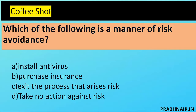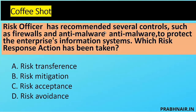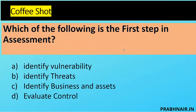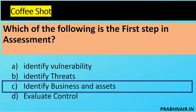Question twelve: a risk officer recommended controls such as firewall and anti-malware to protect information systems — which risk response action has been taken? It's not transfer, not avoidance (they didn't quit the business), and not acceptance. Introducing controls equals mitigation. The answer is B. Question thirteen: which of the following is the first step in a risk assessment? Identifying vulnerability requires knowing what asset to assess; identifying a threat requires context. The first step is to identify assets. The answer is C.